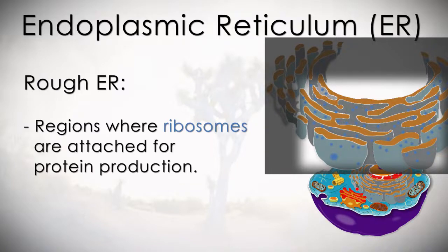The rough ER are regions where ribosomes are attached for protein production.